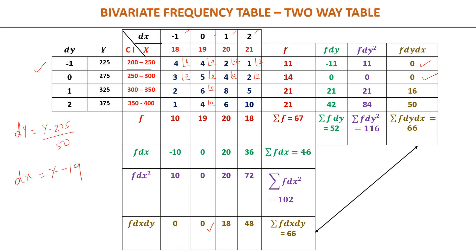Continuing with the remaining cells: 2 × (−1) × 1 = −2; 8 × 1 × 1 = 8; 5 × 2 × 1 = 10; giving a row sum of −2 + 8 + 10 = 16. Then 1 × (−1) × 2 = −2; 6 × 1 × 2 = 12; 10 × 1 × 4 = 40; giving a row sum of −2 + 12 + 40 = 50. When you verify by adding column-wise: −2 + 8 = 6, 6 + 12 = 18; and −2 + 10 = 8, 8 + 40 = 48. Both the row-wise and column-wise totals for sigma f·dx·dy coincide at 66, confirming the table is correct.